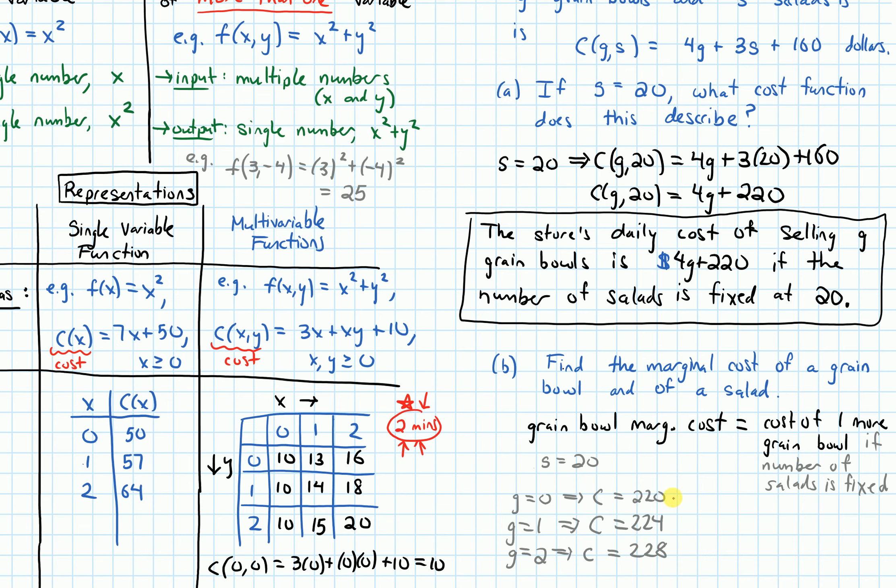So each time this cost function, each time I increase the number of grain bowls by 1, is going up by 4. And it turns out that no matter what value of S that I were to plug in, anytime I increase the value of G by 1, the cost goes up by 4.